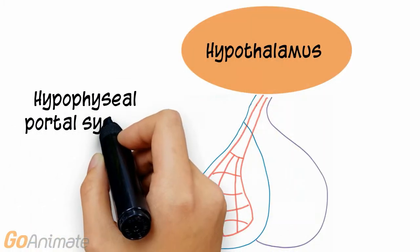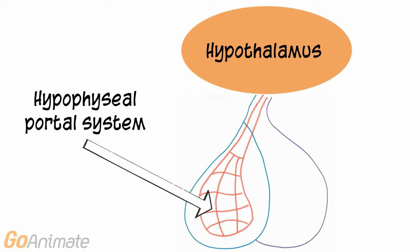The anterior portion of the pituitary gland is linked to the hypothalamus by a blood vessel system called the hypophyseal portal system.